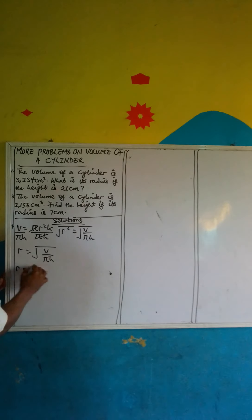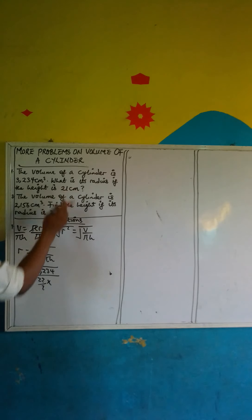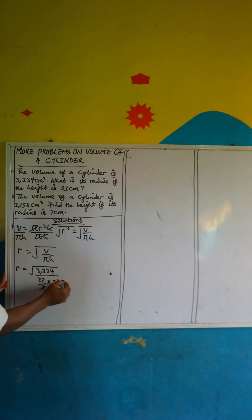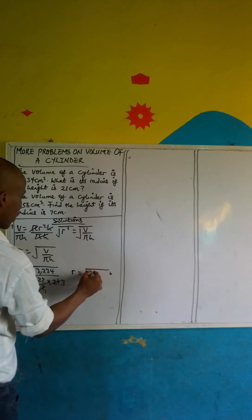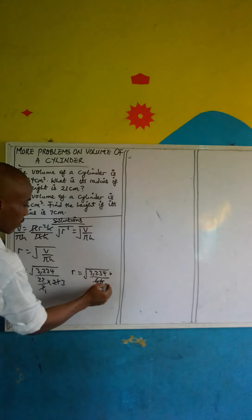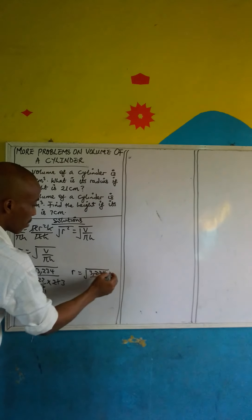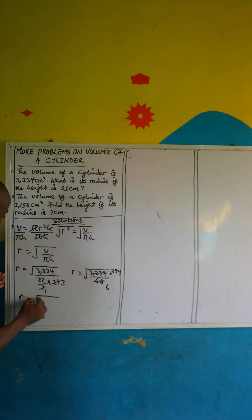r is equal to the square root of: the volume is 3,234, divided by π which is 22 over 7, times the height which is 21. Seven into 21 gives 3, leaving us with r equals the square root of 3,234 over 22 times 3, which is 66. Now let's reduce with 11: 11 into 66 is 6, and 11 into 3,234 is 294.